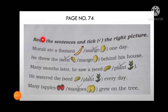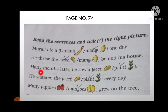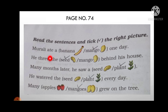The last exercise: put a tick on the right picture. Murali had a banana and a mango one day. He threw the mango seed behind his house. Many months later he saw a plant from the seed. He watered the plant every day. And last, many mangoes grew on the tree. So mango is the right answer — put a tick on the right answer. Our exercise is finished and our lesson is also finished. Thank you, have a nice day.